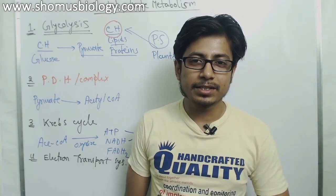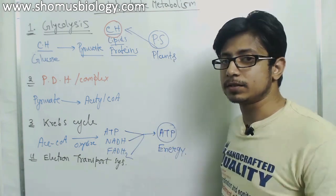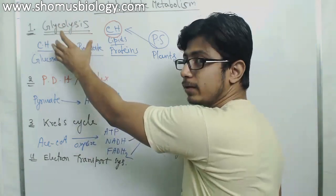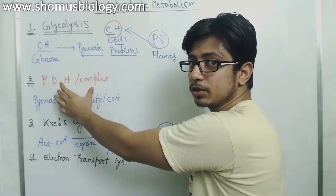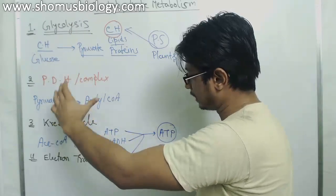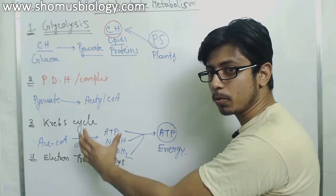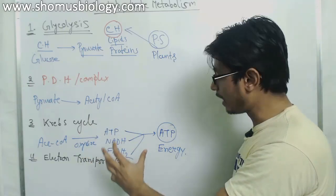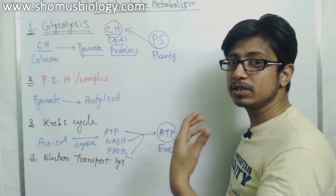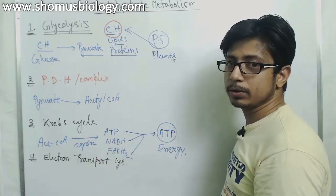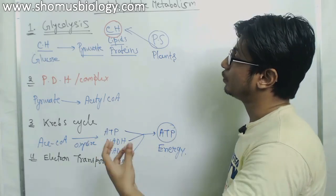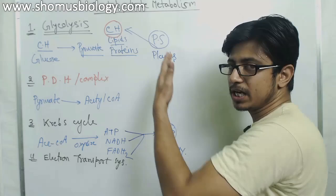Welcome back friends. Welcome to another video tutorial from Shomu's Biology. We have been talking about cellular respiration and its stages. In the last video we saw the different stages starting from glycolysis, then pyruvate dehydrogenase complex, Krebs cycle, and finally the electron transport chain that helps generate energy by utilizing all the macromolecules after digestion — carbohydrates, lipids, and proteins.